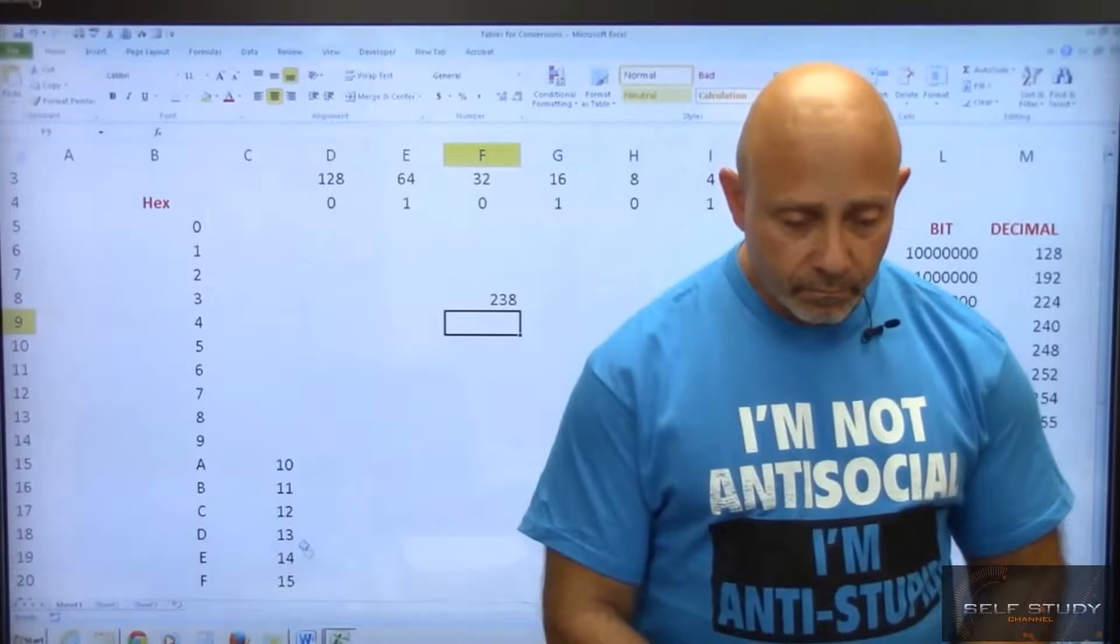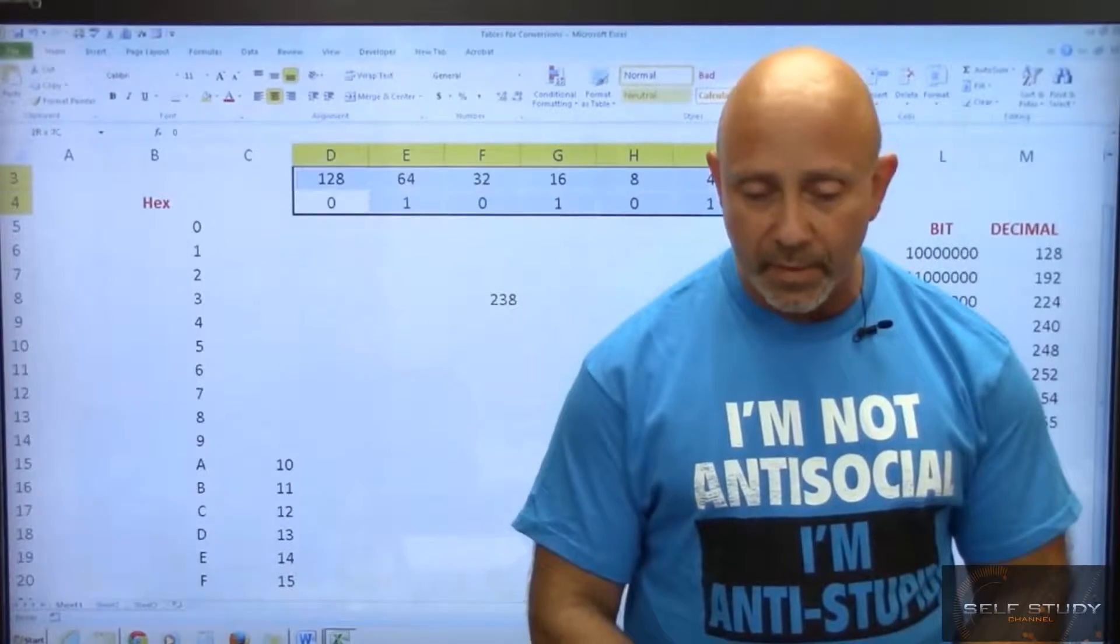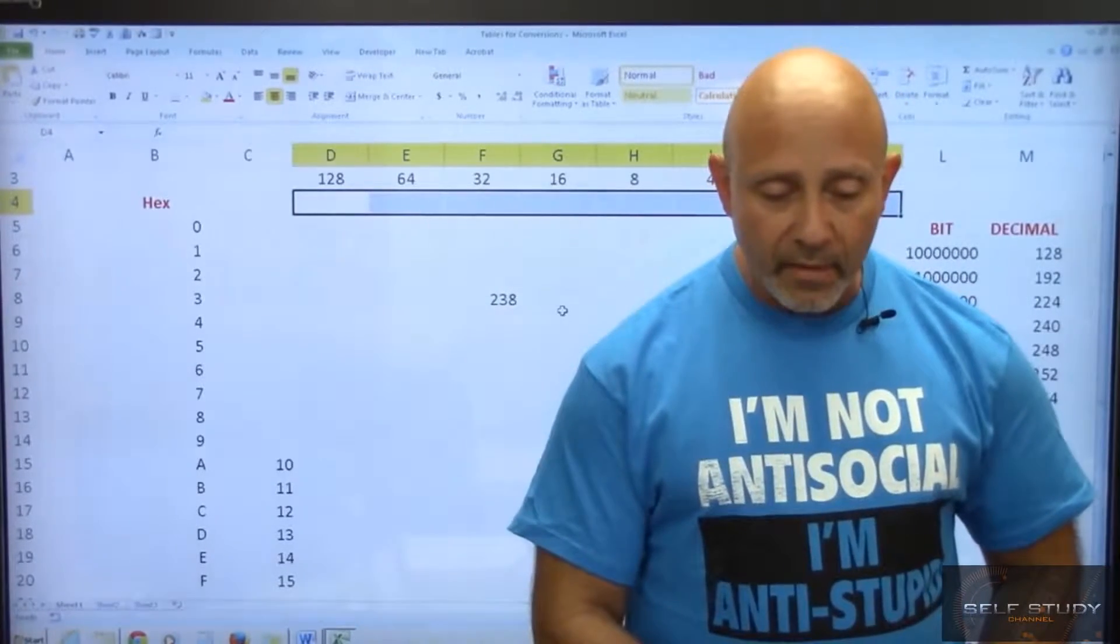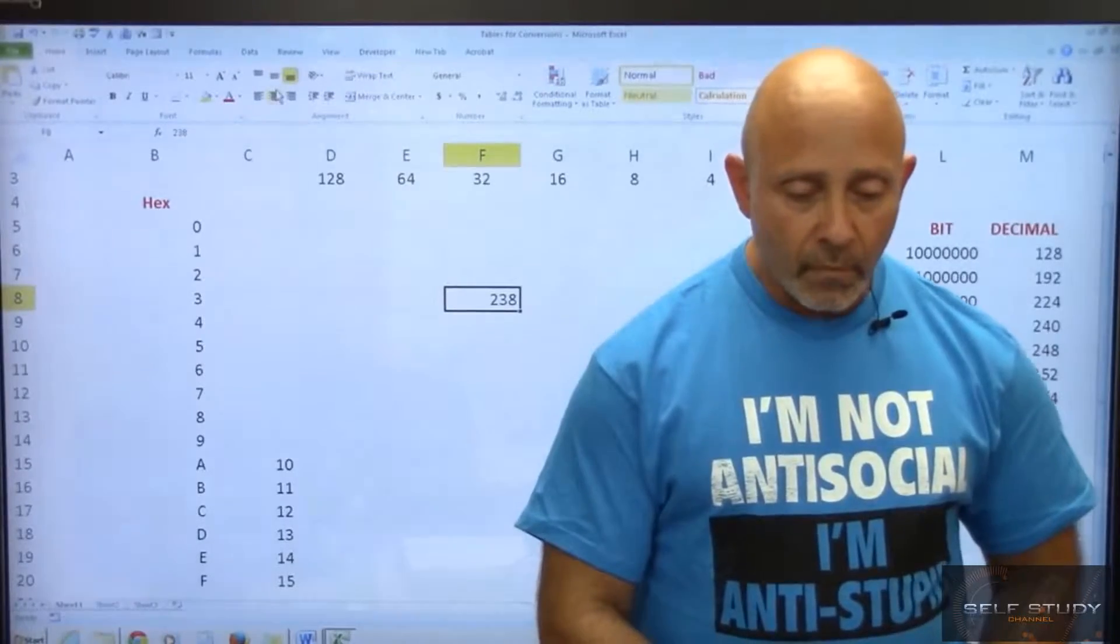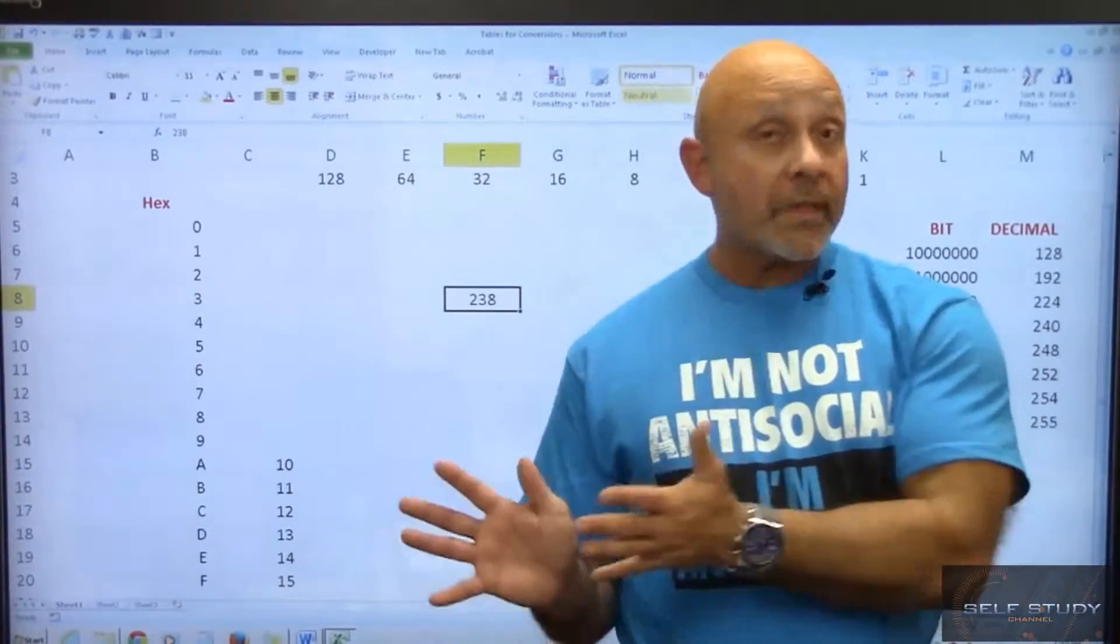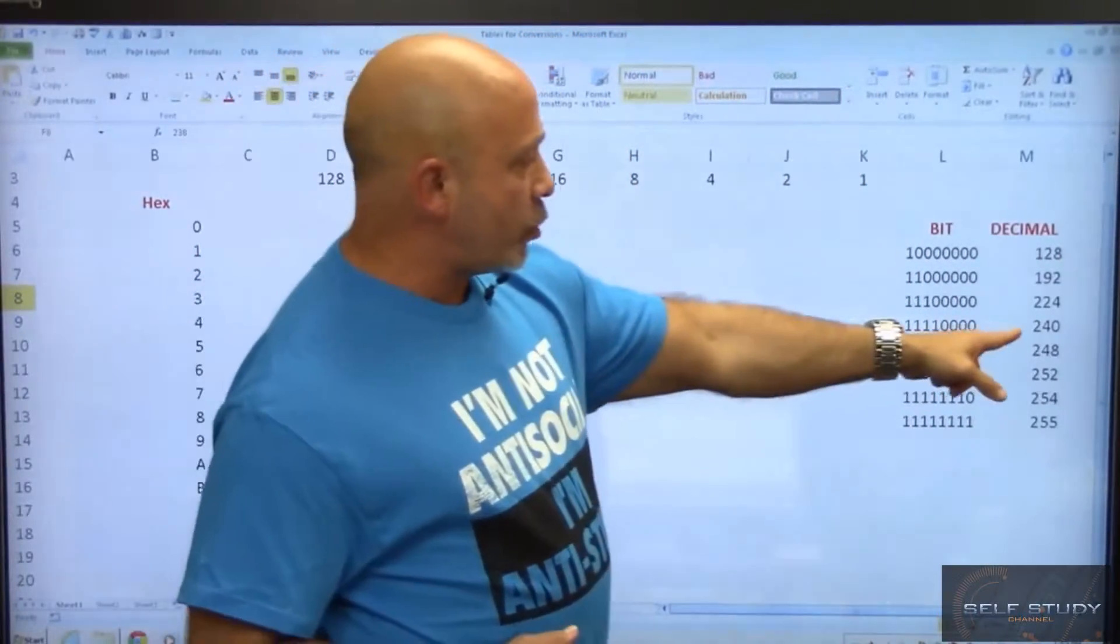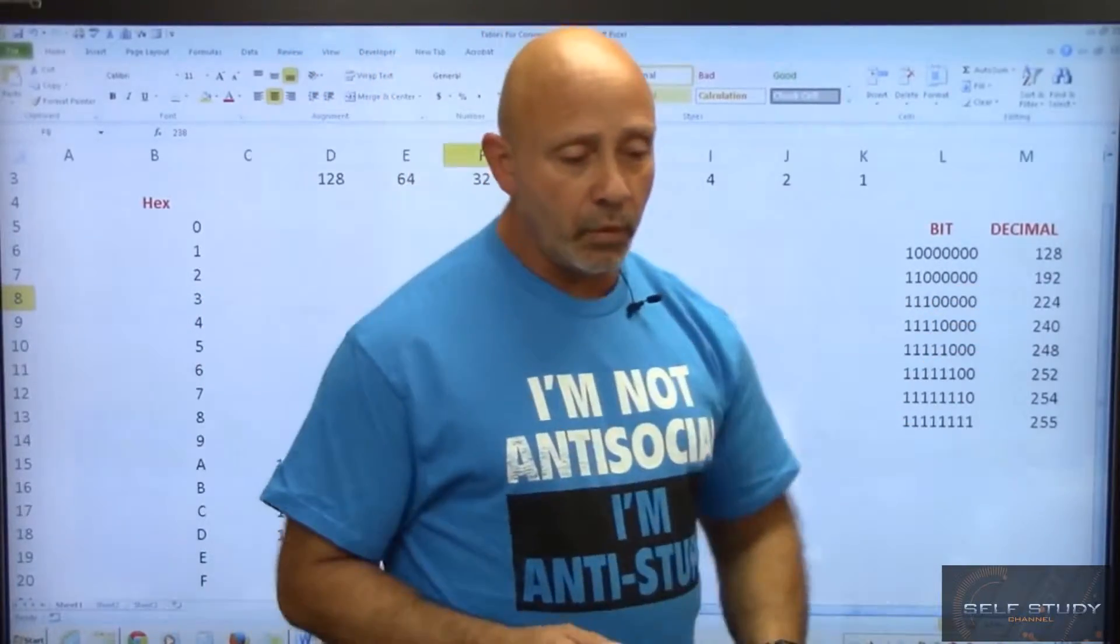All right, so what do you do? There's many ways of doing it. You have a decimal, let me get rid of these numbers here, these binary bit values right here from the previous lesson. We have a number 238, let's center it. So use your table. 238, how close can we get? 240, that's too much. 224, right, 224.